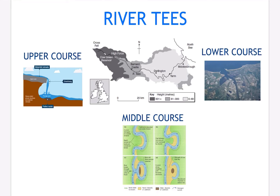Hello everyone, this video will talk you through River Tees, specifically from the point Cross Fell in the North Pennines and then again to the North Sea near Middlesbrough. This is an example of a river valley in the UK, and along this we're going to identify its major landforms of erosion and deposition.